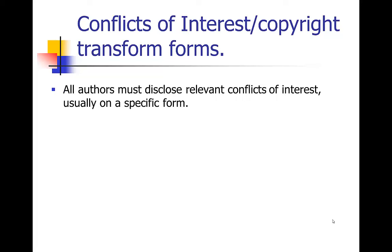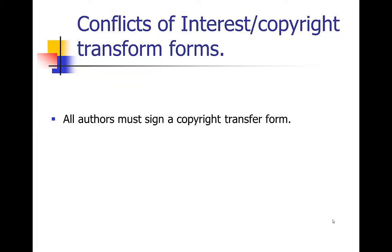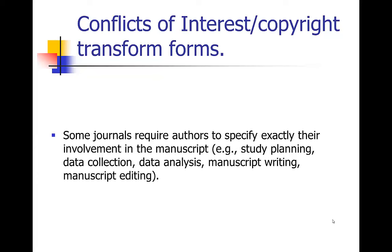Be aware that if you're an author on a paper, you usually have to fill out a conflict of interest form — slightly different for each journal, but all authors have to fill it out. If you're submitting the paper, you'll need to get all authors to complete those forms, so leave time for that. All authors also usually have to sign a copyright transfer form. Some journals have forms requiring authors to specify exactly what their involvement was — whether they participated in study planning, data collection, or data analysis — and some journals even publish this in the manuscript.